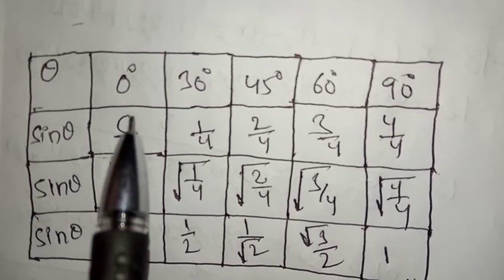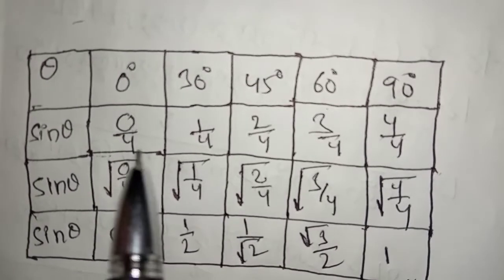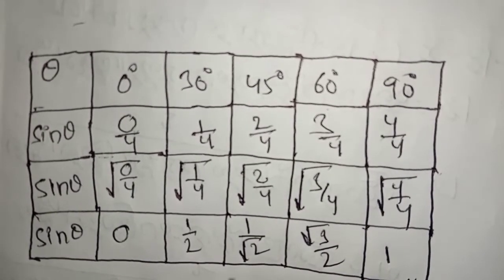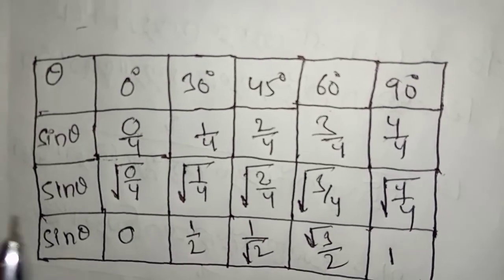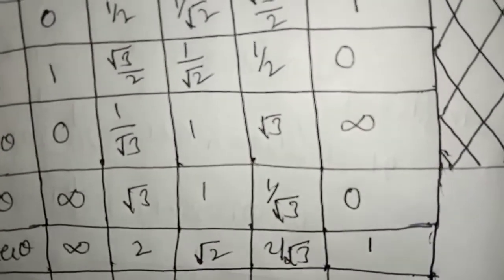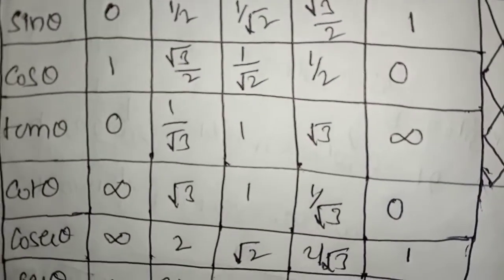Now you see: sin 0 = 0, sin 30 = 1/2, sin 45 = 1/√2, sin 60 = √3/2, sin 90 = 1. The angles are 0, 1, 2, 3, 4 divided by 4, and then take the square root.